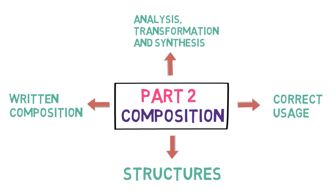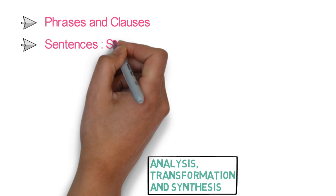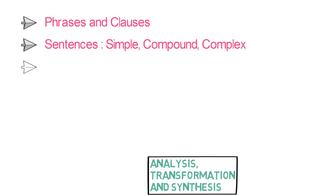In part 1, Analysis, Transformation and Synthesis, the topics that are covered are Number 1: Phrases and Clauses. Number 2: Types of sentences based on structure that includes simple, compound, and complex sentences. Number 3: Transformation of sentences which includes various transformations like active to passive voice, affirmative to negative, simple to compound, simple to complex, and much more.